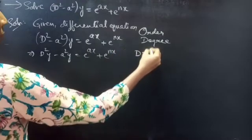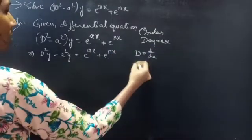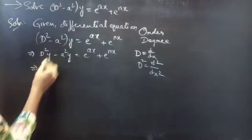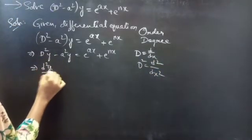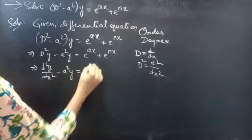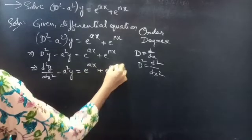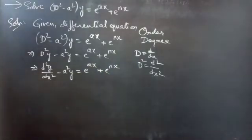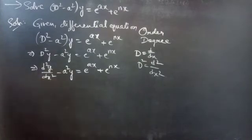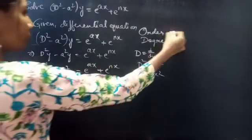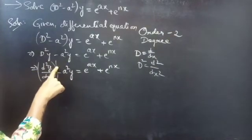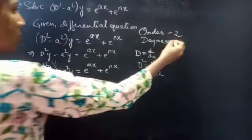We know that differential operator D equals d/dx, so D² equals d²/dx². Then you can write D²y as d²y/dx² − a²y = e^(ax) + e^(nx). Now identify the highest derivative here: d²y/dx² is the highest derivative, so our order is 2. The highest power of the highest derivative is the degree, so here our degree is 1.